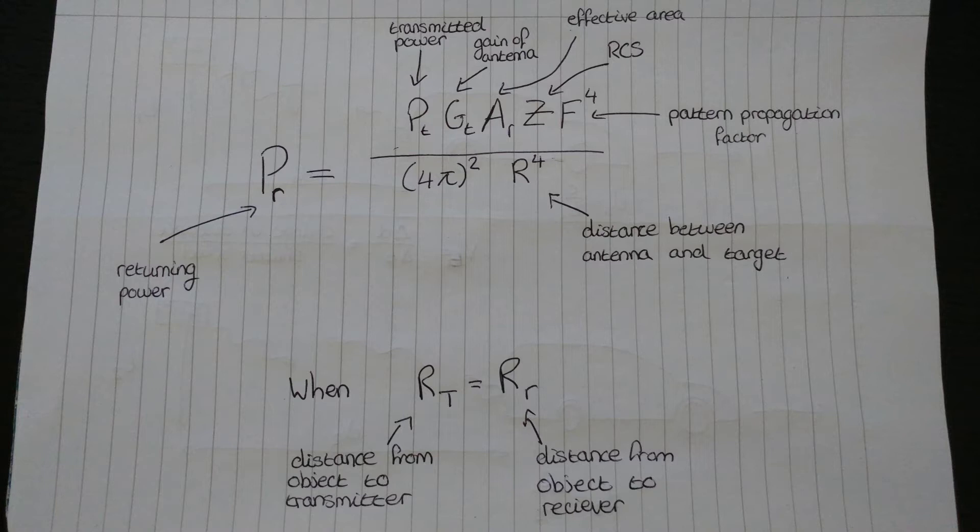When the distance between the object and the transmitter and the object and the receiver is the same, which is the case for speed cameras, then the power returning back to the aerial is given by this equation. It looks very complicated, but actually there are very few things that vary here. We assume that the transmitted power and the gain of the antenna remain the same. Then we know that the effective area of a car is essentially the same. Then we have the RCS factor, which is what we discussed earlier.